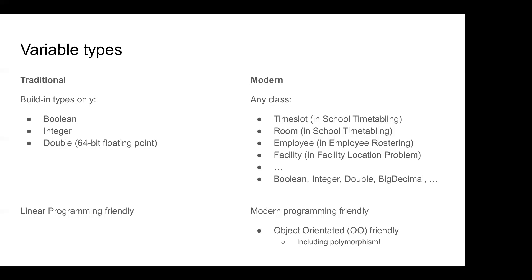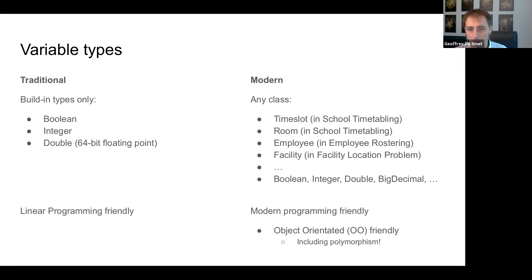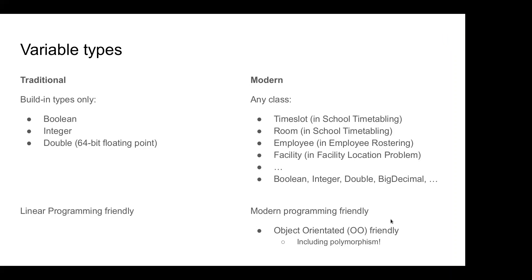Jacob: So basically you specify a domain-specific language for constraint programming, introducing domain-specific terms like room, employee, facility? Jeffrey: Yes — instead of saying we assign a lesson to an int from 1 to 10 representing ten rooms, we assign a lesson to a room object. That's more object-oriented. You can even use polymorphism — a driving lesson might have extra variables because it needs to assign a car.